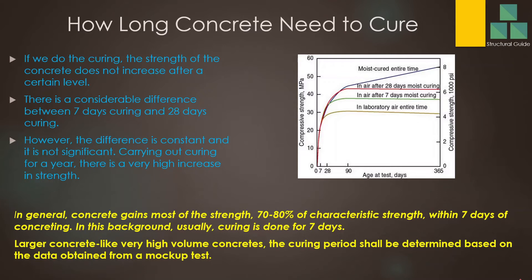But in thick concrete, this may be somewhat different. When you have concrete like one, two, or three meters thick, the core temperature rise may be controlled by different methods, but the heat generated in the core may not drop to an acceptable level within seven days. In such cases, we can identify the required curing period by a mock-up test done before the actual concrete pour, so we get the data and determine when to stop curing.